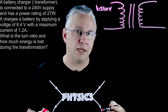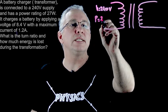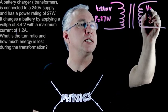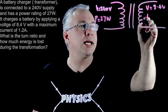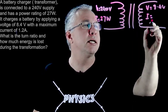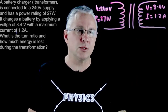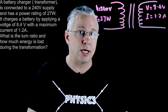We're also provided another bit of information and we're told that the power rating is equal to 27 watts. On the other side we're told that the voltage on this side is 8.4 volts and we're also told that the maximum current here is 1.2 amps. And then we're asked, what's the turn ratio and how much energy is lost in this particular situation?